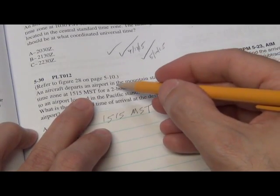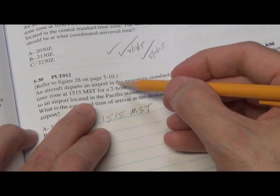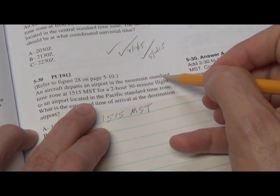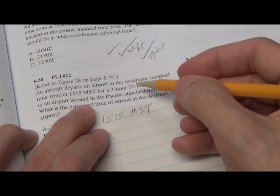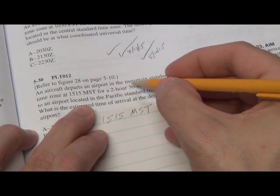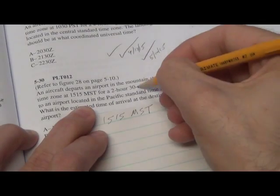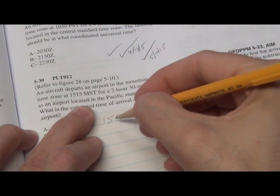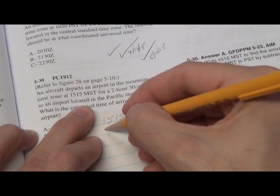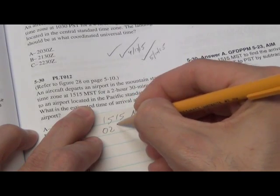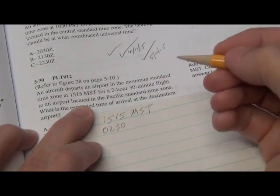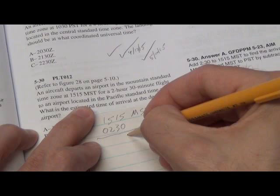The next thing we want to know is how long they were in flight. Well, it says for a 2 hour and 30 minute flight to an airport located somewhere else in the world. We don't care right now. We just know they were on board. The flight was in route for 2 hours and 30 minutes. So you've got to add on 2 hours and 30 minutes to this number here. So you express 2 hours and 30 minutes by writing it that way. And then you can simply add.